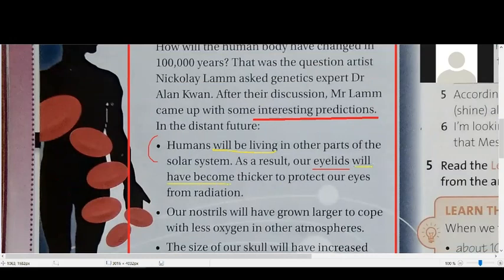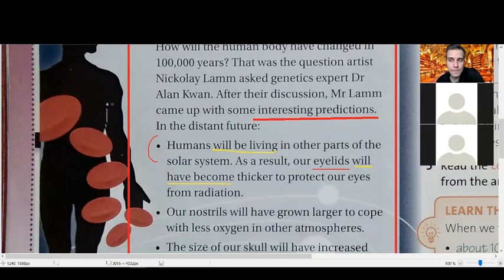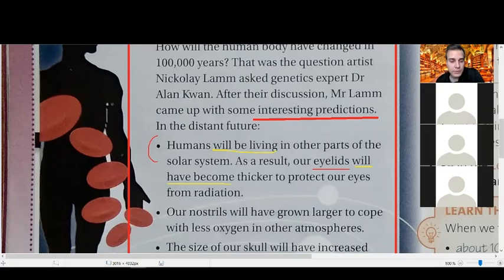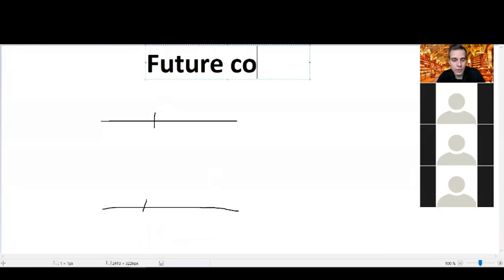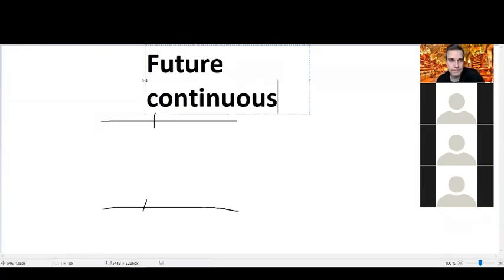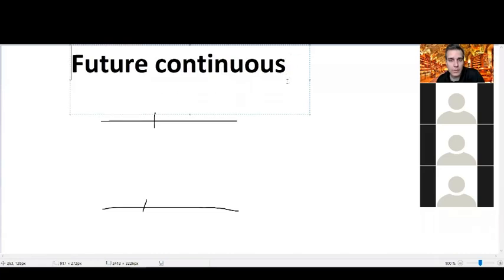Okay? So my first question is, which one is the continuous? Který z nich je ten průběhový budoucí? Does anybody know? Will be living. Will be living, good. Now, let's go to this part where I want to discuss this part. So we have future continuous.